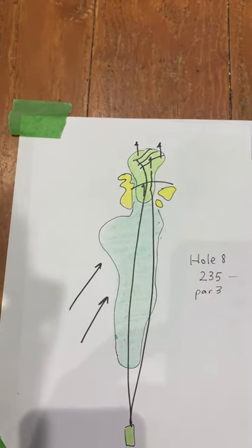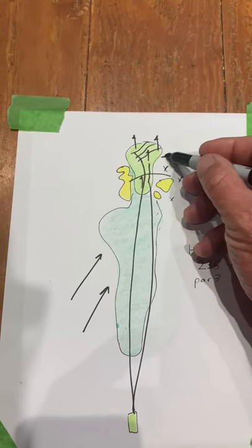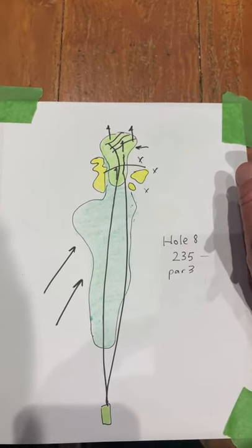...on the right side because it's down grain this way. Good hole, long par three.